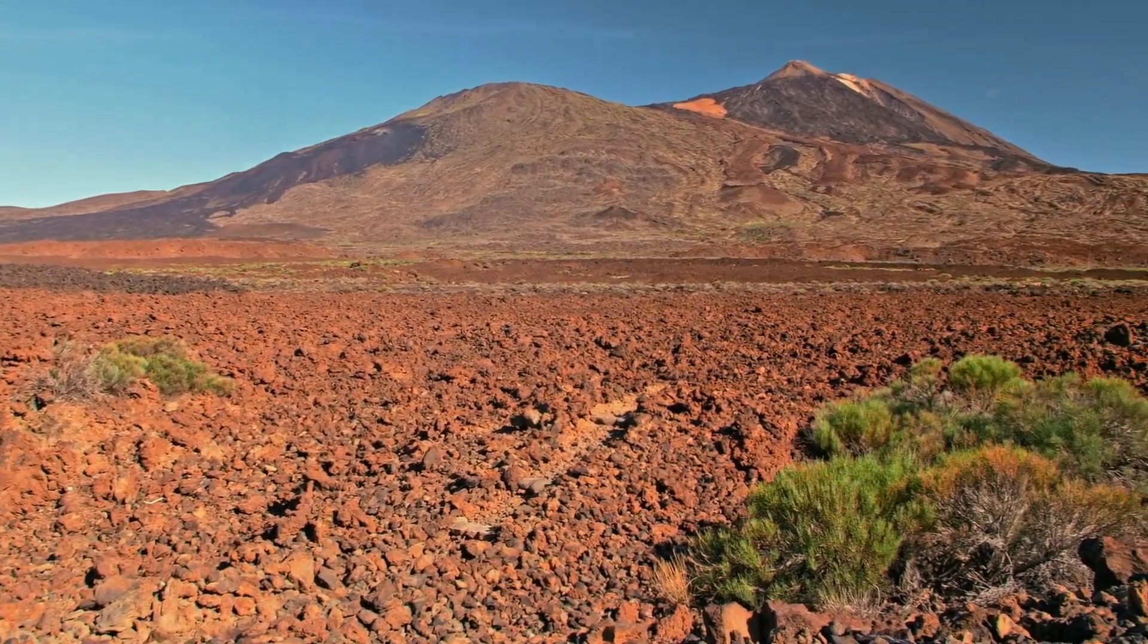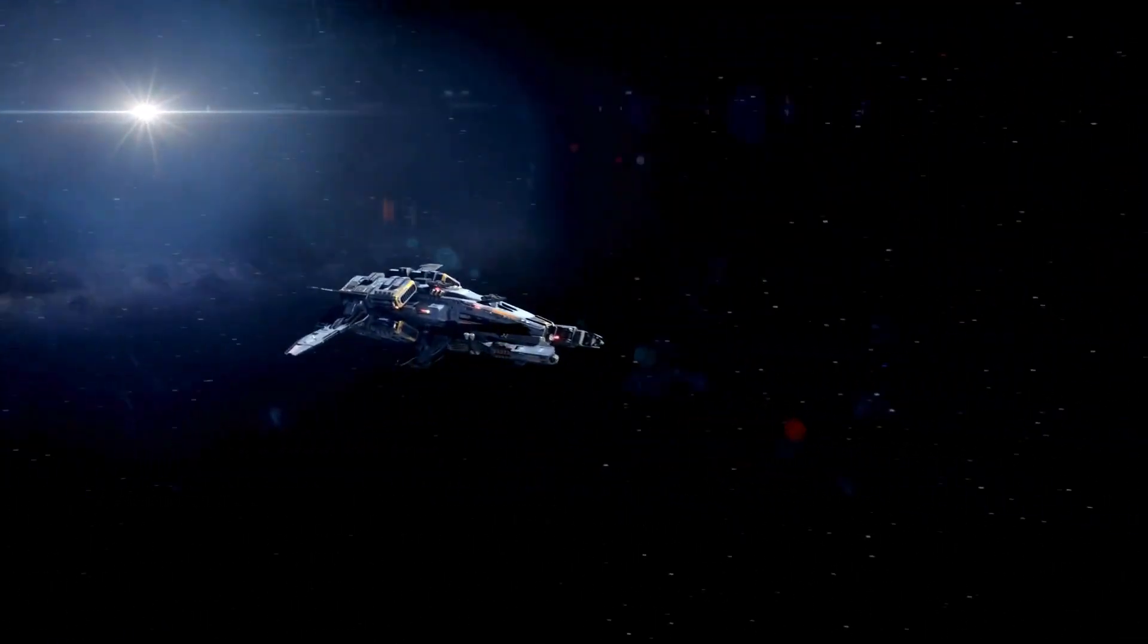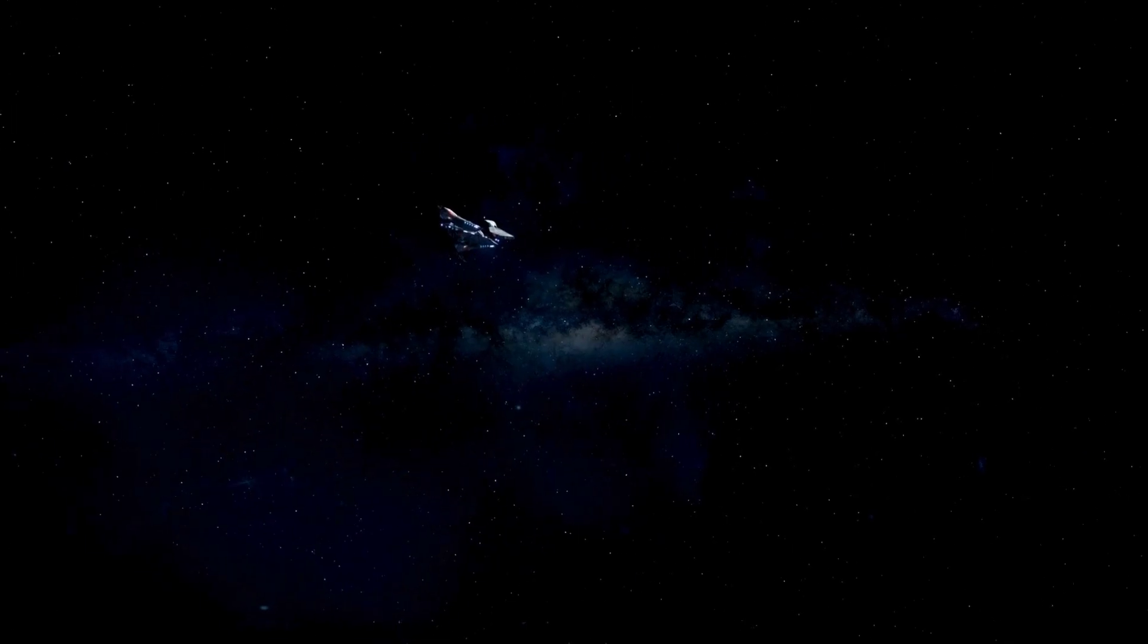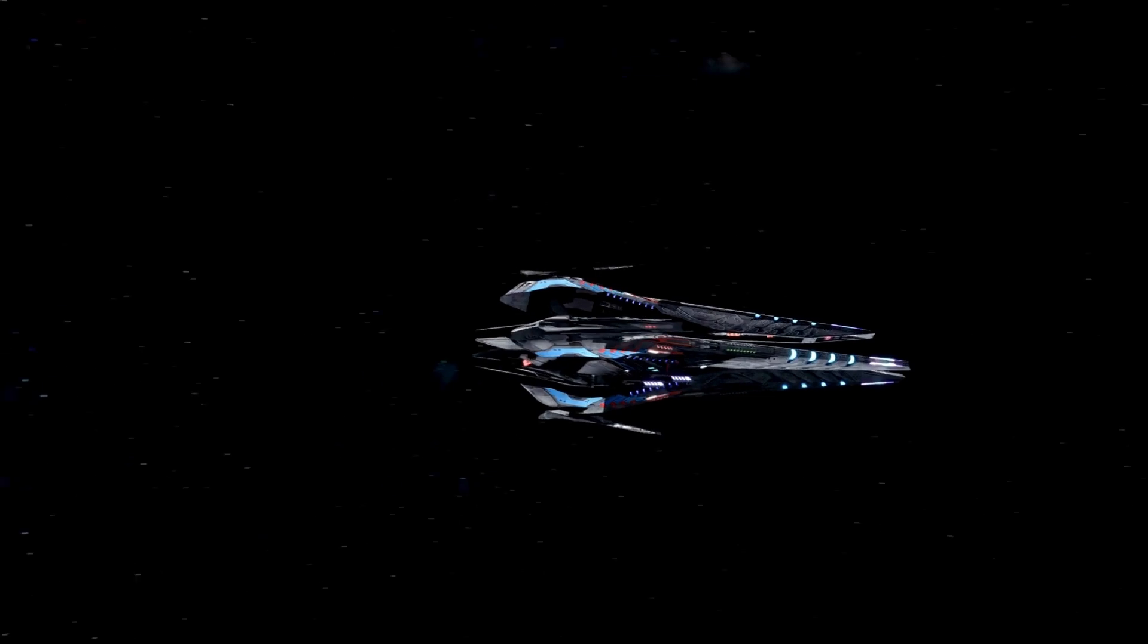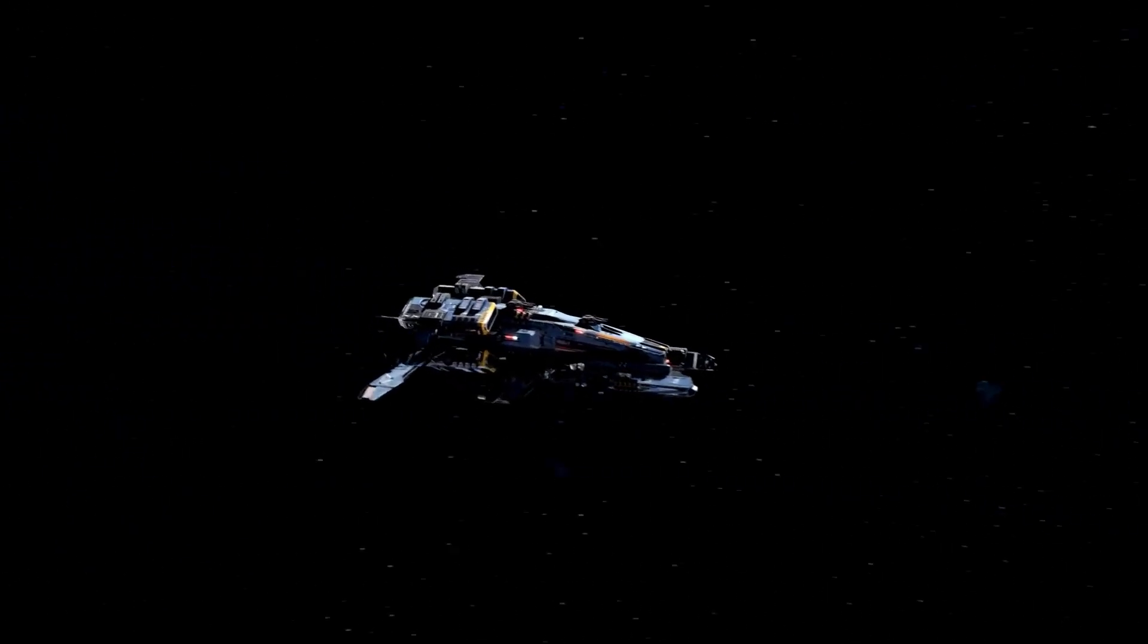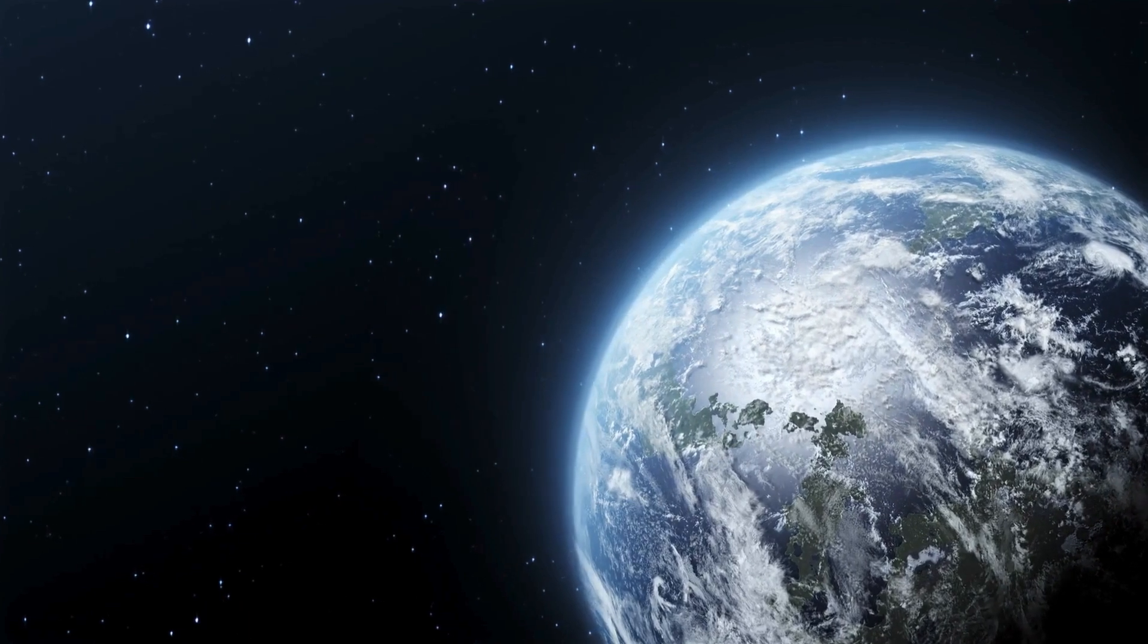In the vast expanse of space, a mysterious planet exists in the habitable zone of its star, Proxima Centauri. This planet is not just any ordinary rock. It's Earth's cousin, Proxima Centauri b, located a mere 4.2 light-years away from us. This planet is shrouded in mystery and wonder. Could it be another Earth, with oceans and life teeming on its surface?